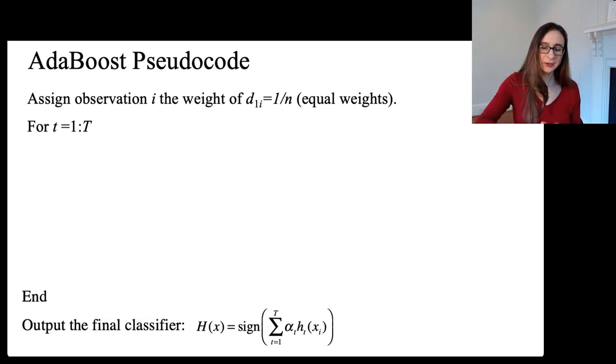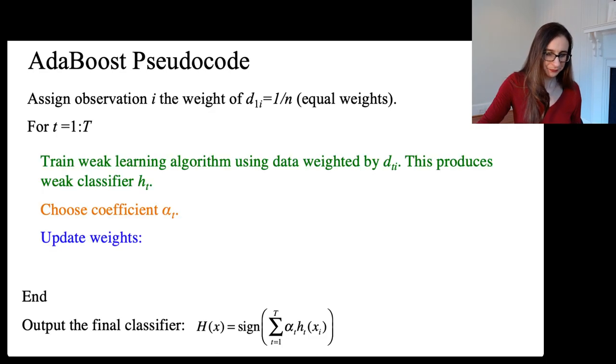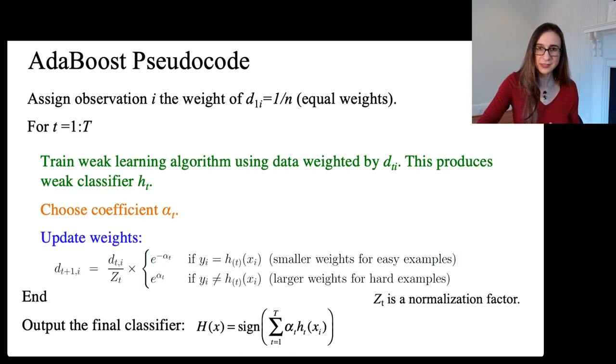Let's go through the pseudocode for AdaBoost with a little bit more detail. We have these three steps in the loop. We train the weak learning algorithm using the weighted data. We choose the coefficients and we update the weights. This is the weight update we were doing during that demo. You take the weight that you had, d_ti, in the current iteration. And then if the weak classifier got it right, you downweight it by a factor of e to the negative alpha. And if the weak classifier got it wrong, then you upweight it by e to the alpha. After it changed all of those weights, then it normalized everything by dividing by Z_t, which is just the sum of the weights, just to make sure everything adds up to one.